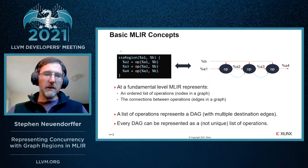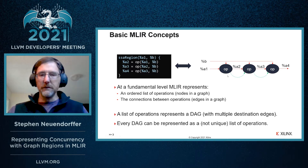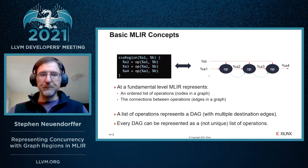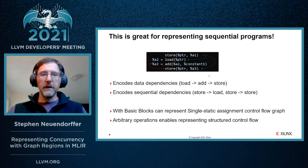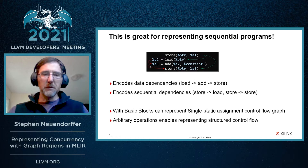When you think of a region in MLIR, you can think of a DAG, and every DAG can be represented as a region. This turns out to be great for representing sequential programs. We have a relationship between each operation — we can represent the data dependence between the load and the add as A2, and the dependence between the add and the store as A3.